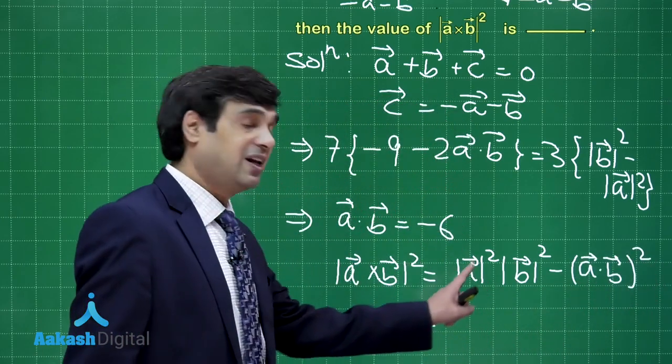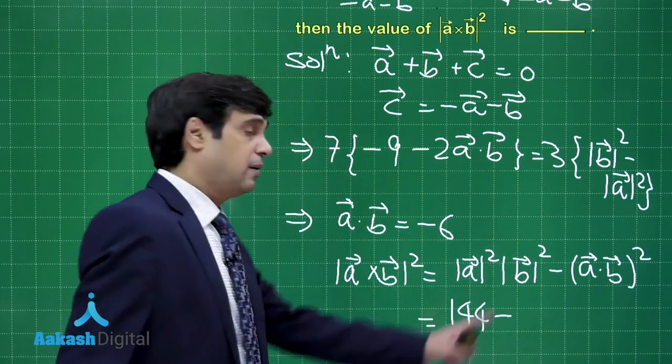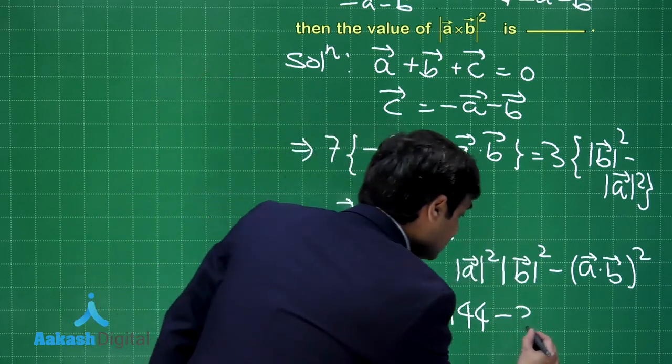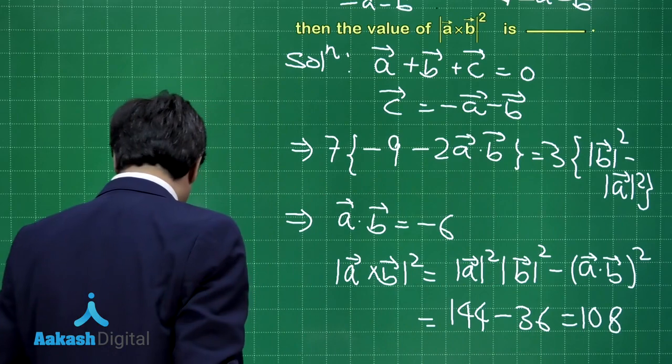This is 3 into 4, it is a square, that is 144 minus minus 6 square, that is 36, giving you result as 108.